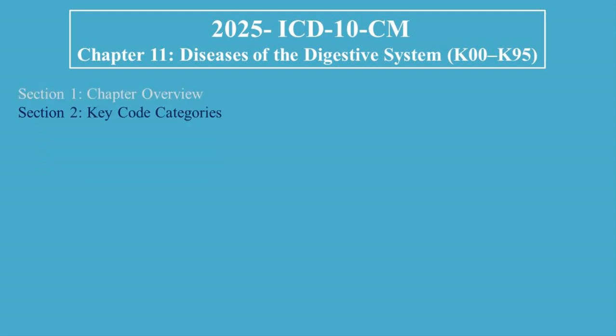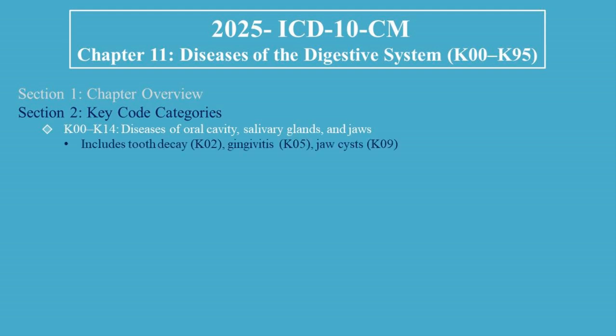Section 2: Key Code Categories. Let's look at the major blocks of codes within Chapter 11. K00 to K14 covers diseases of the oral cavity, salivary glands, and jaws. This includes tooth decay (K02), gingivitis (K05), and jaw cysts (K09).